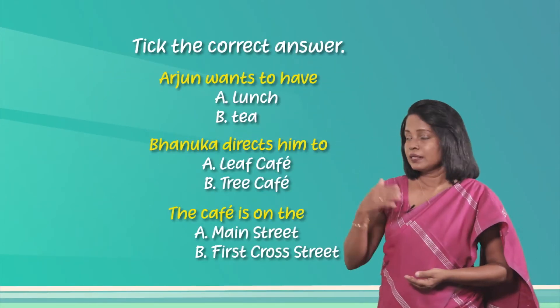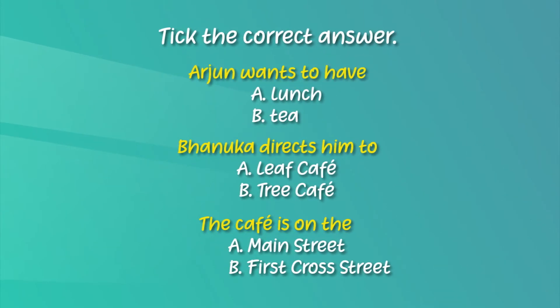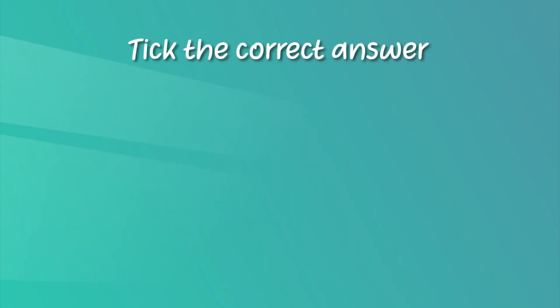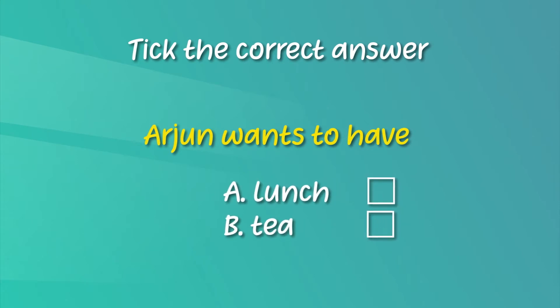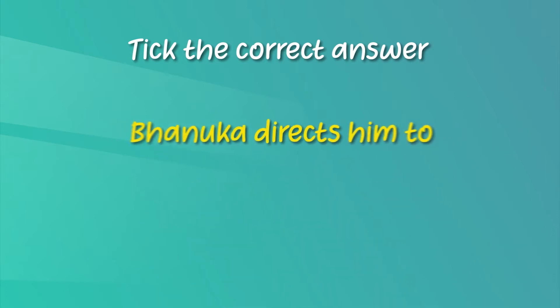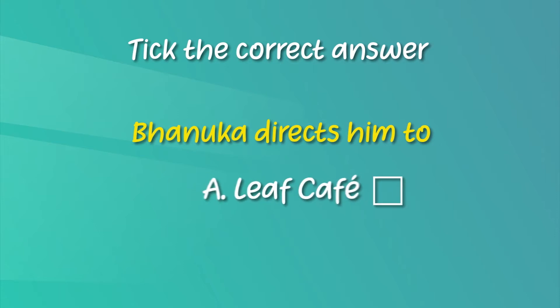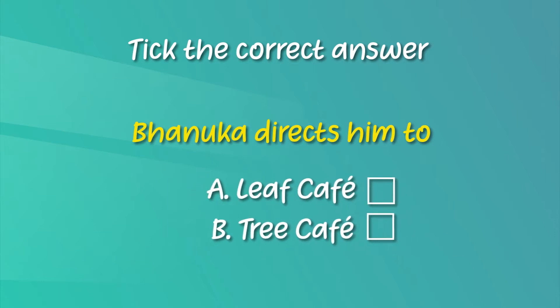Now you have listened to the first part of their dialogue. Let's do an activity — you are going to listen and find specific information. What about the first one? You have two options and you have to pick the correct answer. Arjun wants to have — yes, Arjun wants to have tea. Second one: Banuka directs him to Leaf Cafe or Tree Cafe? The dialogue says Leaf Cafe.